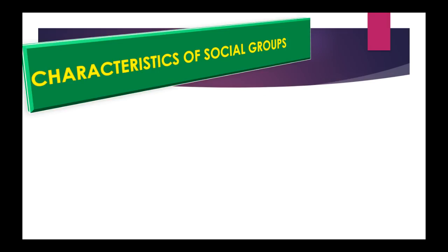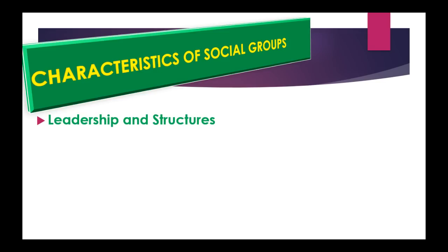Moving on to the characteristics of social groups. The first characteristic is structure and leadership. Formal groups have a clearly defined hierarchical structure, giving a clear line of authority and levels. Aspects of the organization — including structure, rules to be followed, and general procedures — may be required and written down.